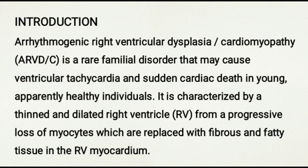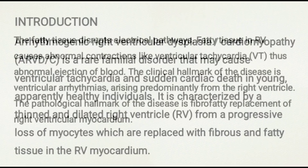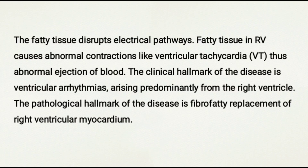As the name suggests, ARVD predominantly affects the right side of the heart. It is a rare familial disorder that may cause ventricular tachycardia and sudden cardiac death in young, apparently healthy individuals. It is characterized by a thinned and dilated right ventricle from a progressive loss of myocytes, which are replaced with fibrous and fatty tissue in the RV myocardium. This fatty tissue disrupts the electrical pathways and causes abnormal contractions like ventricular tachycardia, leading to abnormal ejection of blood.